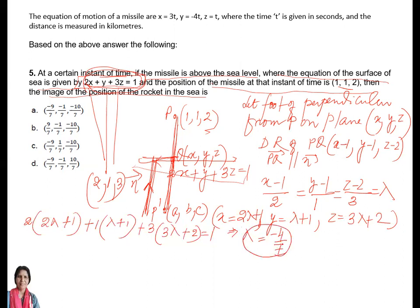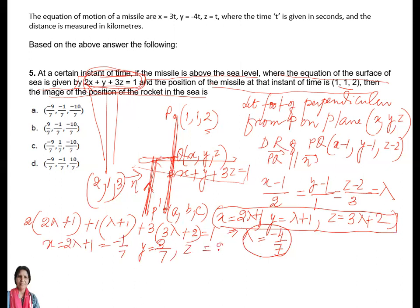After getting λ = -4/7, we find x, y, z. x = 2λ + 1 = -1/7. y = λ + 1 = 3/7. z = 3λ + 2 = 2/7. So the foot of the perpendicular Q is at (-1/7, 3/7, 2/7).